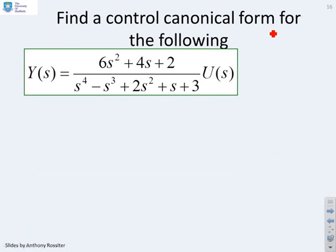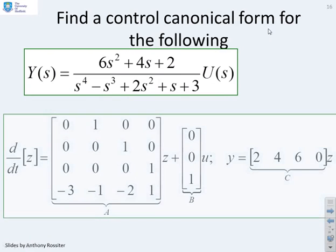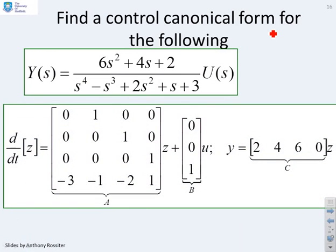Different example then. Find a control canonical form for the following. And you'll see this numerator is far more complicated. So again, I do my a and b matrix, and you'll see the coefficients 3, 1, 2, minus 1 have appeared down here in the bottom row as expected. And I've got a 1 in the bottom row of the b matrix. Then all I do is I look at the numerator, and you'll see I've got 2 times the underlying state. So 2 in the first position. 4s, so 4 times dx dt, 4 in the second position.